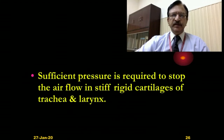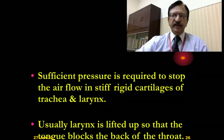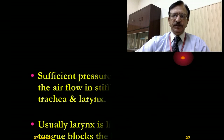Sufficient pressure is required to stop airflow through the rigid cartilaginous structure of the trachea and larynx. Usually the larynx is lifted upward so that the base of the tongue blocks the air passage against the posterior pharyngeal wall, and the tongue is pushed up and back, occluding the posterior nasal passages.